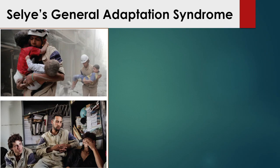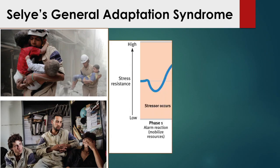And then in the bottom, what you see is after it's sort of over with and we've gotten all the survivors out that we can — we're sort of trying to recoup. So if we look at Selye's model, phase one is when the stressor occurs and you are trying to mobilize your resources. You notice that dip that occurs.